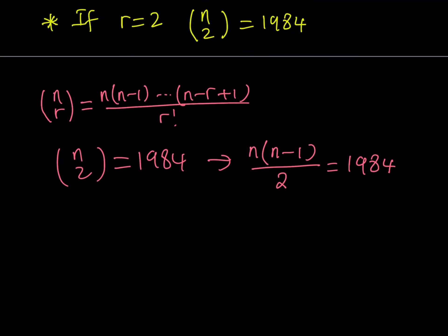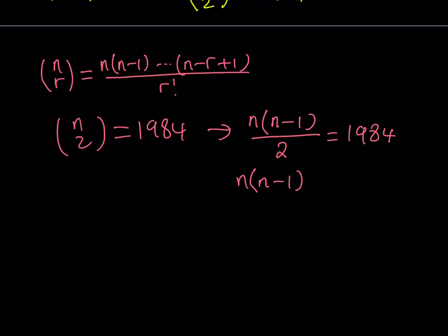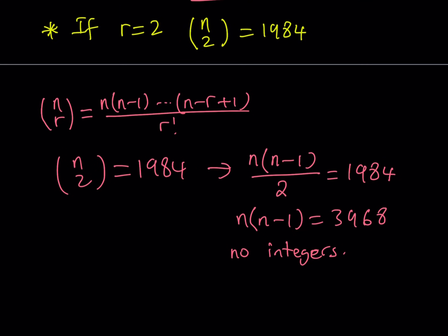Is that possible at all? Let's go ahead and check it out. n times n minus 1 is equal to 1984 times 2, which gives us 3968. Now, if you think about it, the square root of 3968 is somewhere around 63. But notice that these are two consecutive numbers, and their product is never going to end in 8 — if you check 1×2, 2×3, 3×4, 4×5, 5×6, 6×7, it never gives you something ending in 8. That means we don't have any integer solutions here. So there are no solutions for r equals 2.